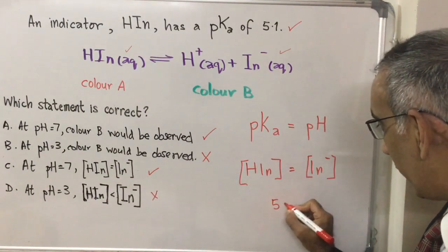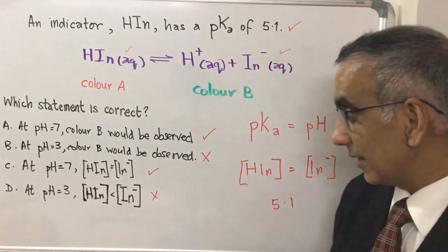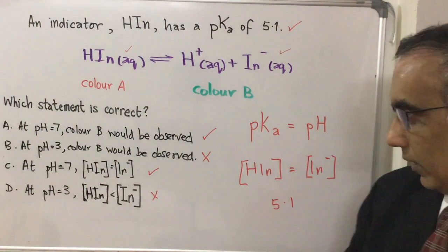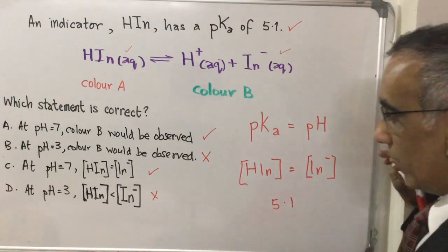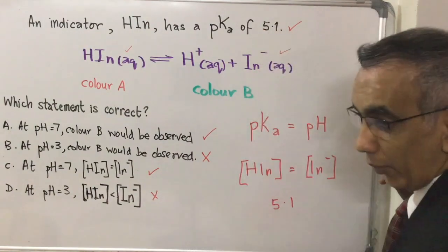So therefore we could based on that eliminate C. But let's not stop there. Let's go into some detail to understand exactly why this is so at 5.1.